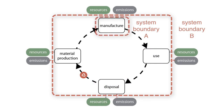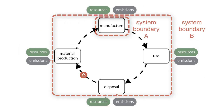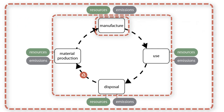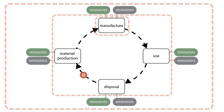As in the case of A, there are externalities associated with system B. What if we include system C as the boundary? In the case of system C, both the resources and emissions associated with each stage of the life cycle are within the boundary of things that concern us. This example shows that by moving the boundary of the system, you can see that the things that concern us change. The system boundary really is a concept that we invent and impose on what we call reality.